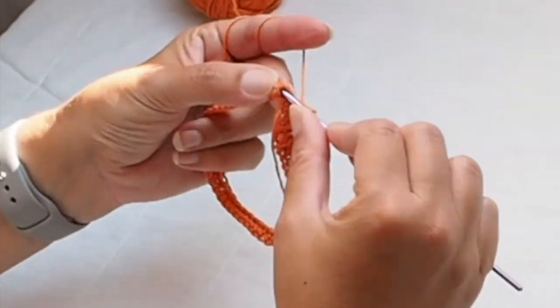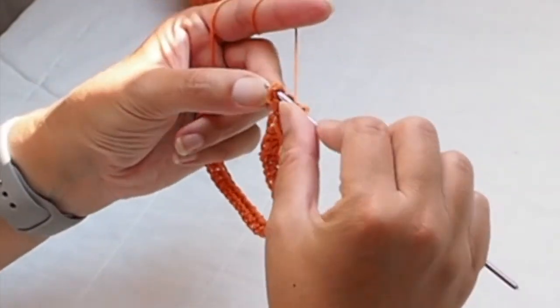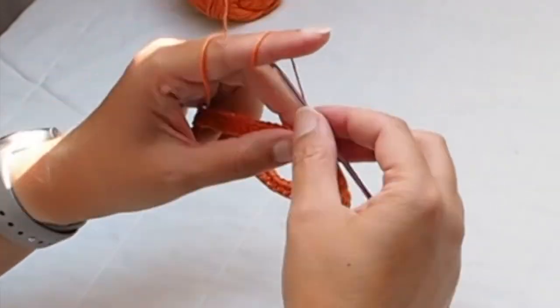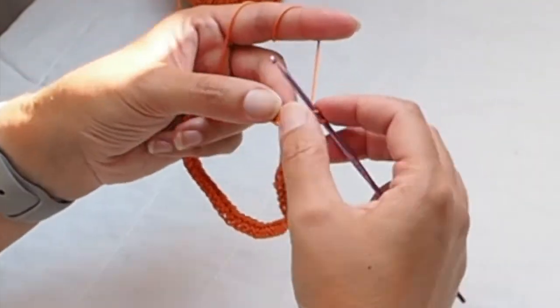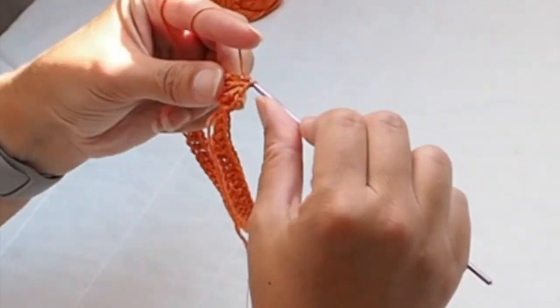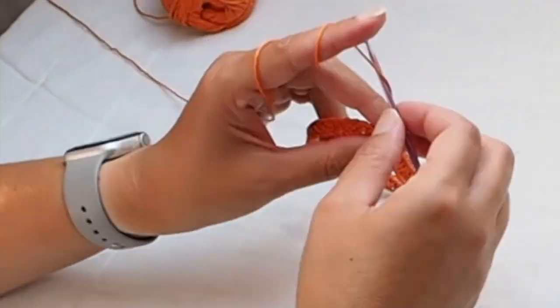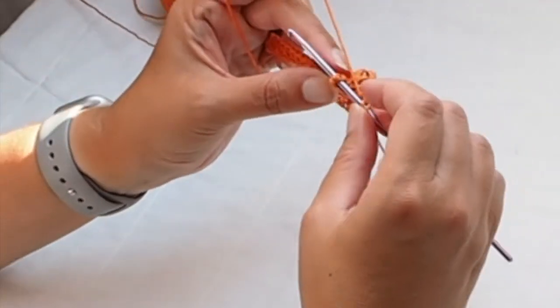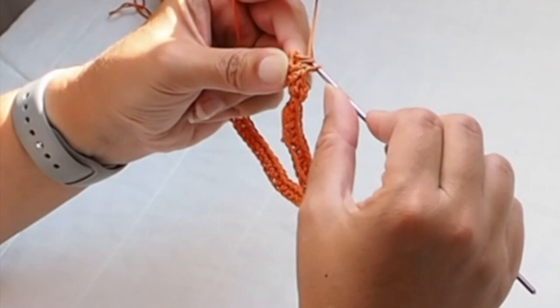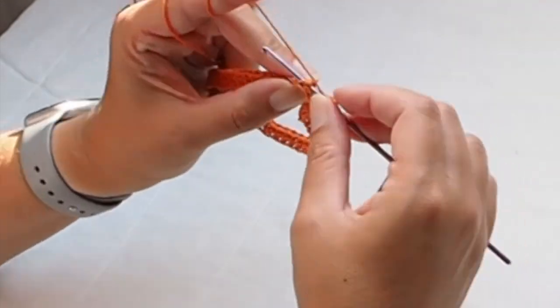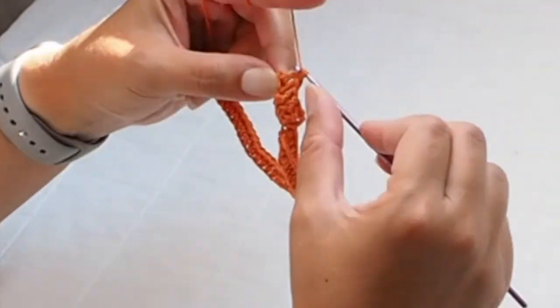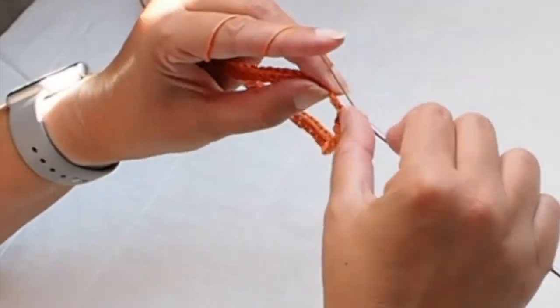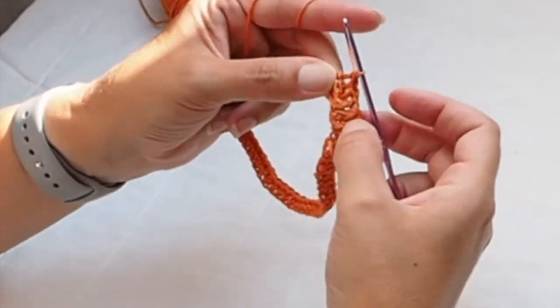I decided to crochet three front post double crochet and then three back post double crochet, and again I repeat the pattern. Three front post double crochet just to create a design for the pumpkin.